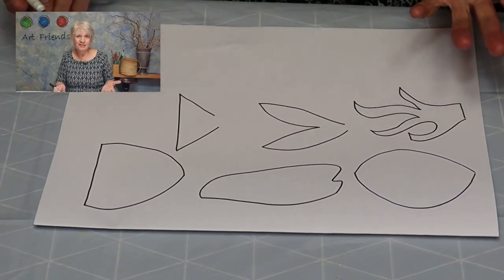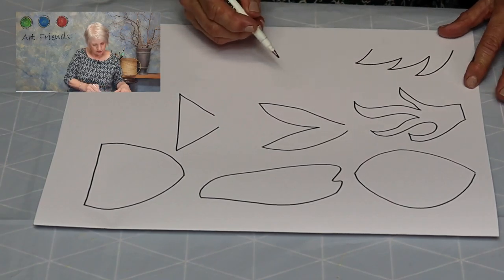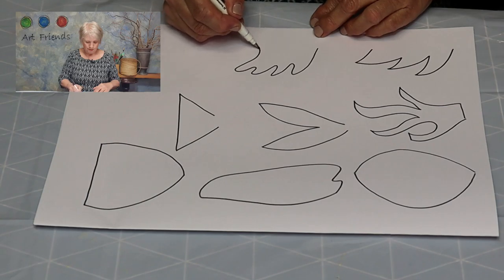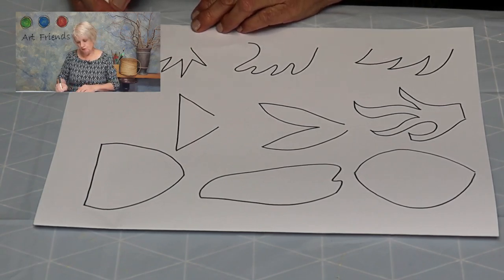And the next thing, of course, is some fins. Let's go for some fins. Some big shark sort of fins. Some wobbly fins. And maybe some quite zigzag crazy fins.